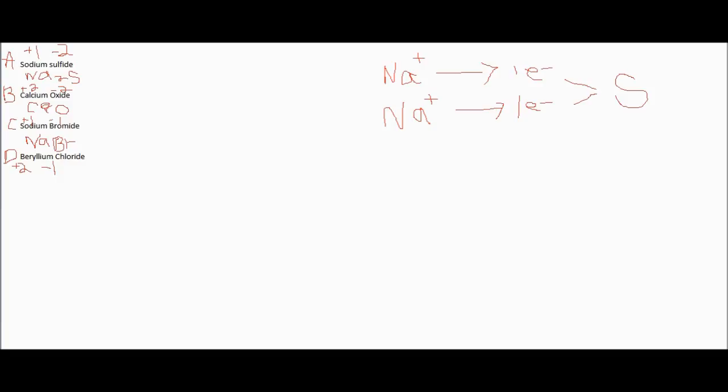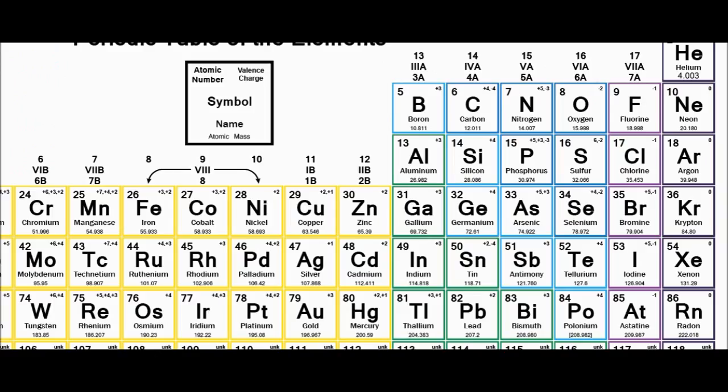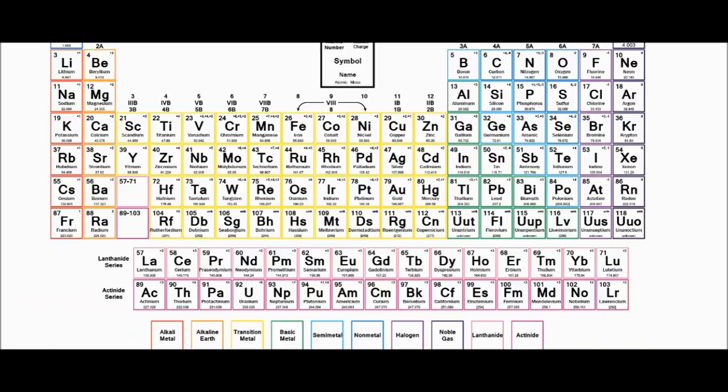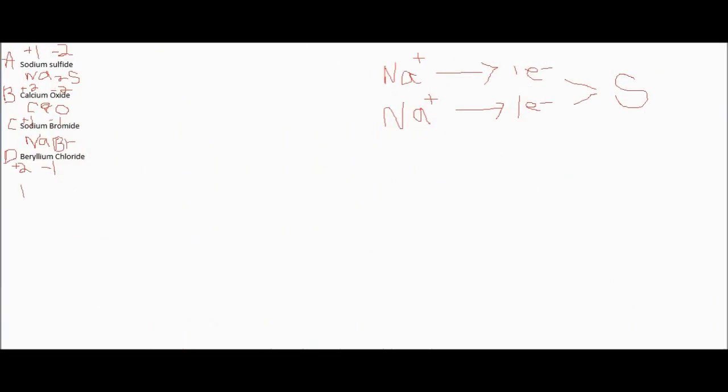So beryllium, Be, and chlorine, Cl. To balance this, you'd need 2 of the negative 1 to balance the plus 2 to equal 0. So Cl is going to have to have 2 of them. And that's all you need to know. Thanks, see you next time.